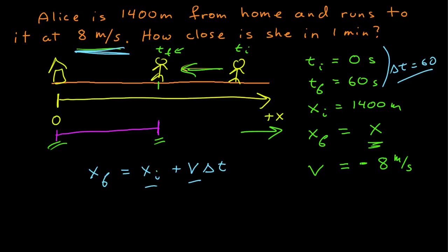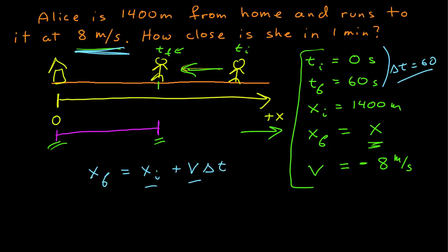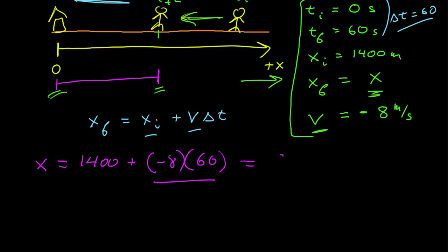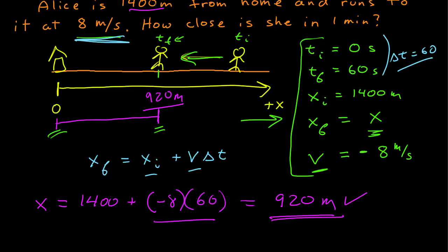Now let's solve. My final position x equals the initial position 1400, plus velocity negative 8, times time 60 seconds. That gives negative 480, so 1400 minus 480 is 920 meters. Her position in 60 seconds is 920 meters, which is how far she is from home. Does it make sense? It's smaller than 1400, which is reasonable. Note that if I had used positive 8, I would have gotten a number larger than 1400, which would have indicated a mistake.